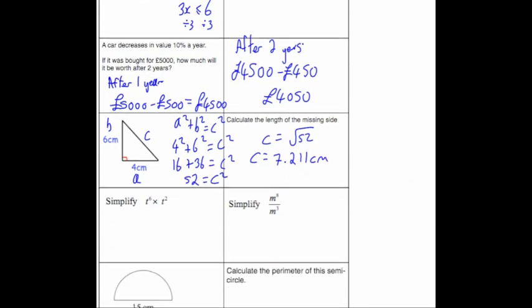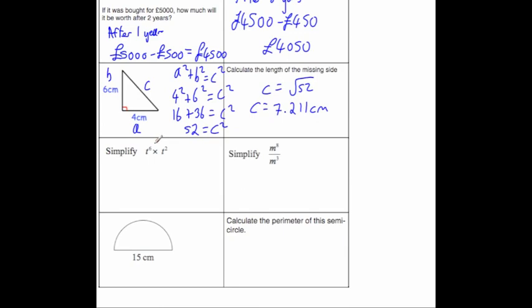Our next question says to simplify T to the power of 6 times T to the power of 2. Whenever you're simplifying something like this in indices questions, you add the powers together whenever you're multiplying. So we're going to get T to the power of 8, 6 plus 2 is 8. This time we've got dividing, so we're going to take away the powers. That's going to be M to the power of 5.